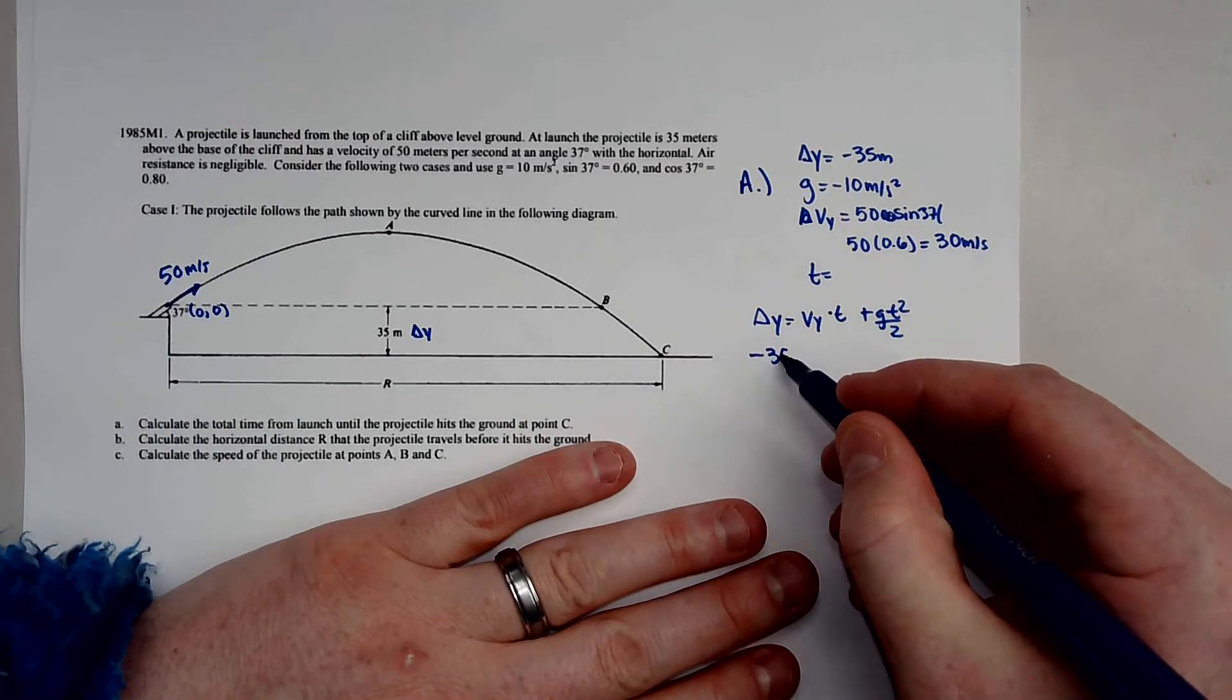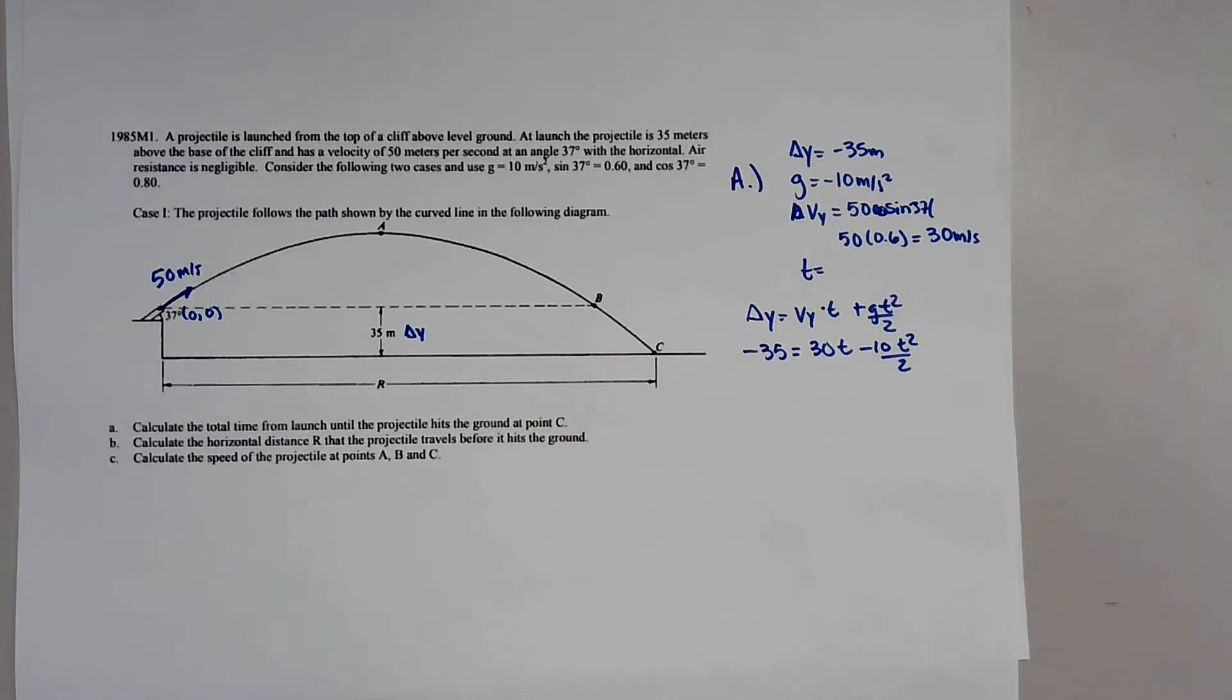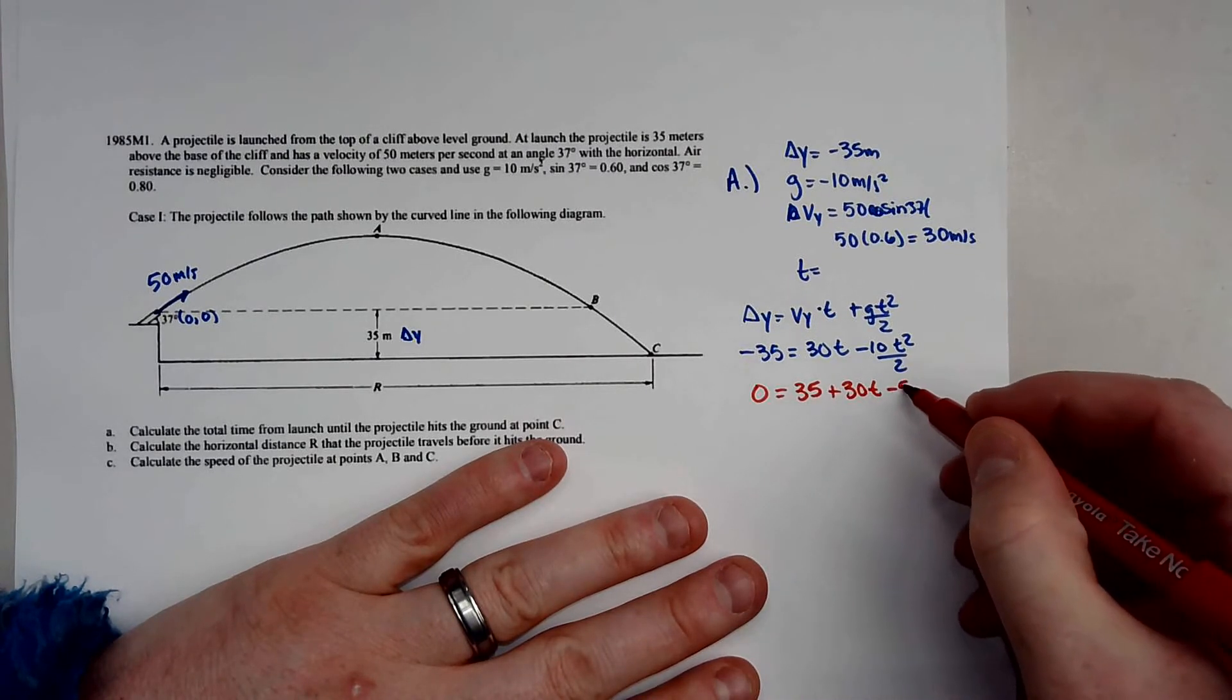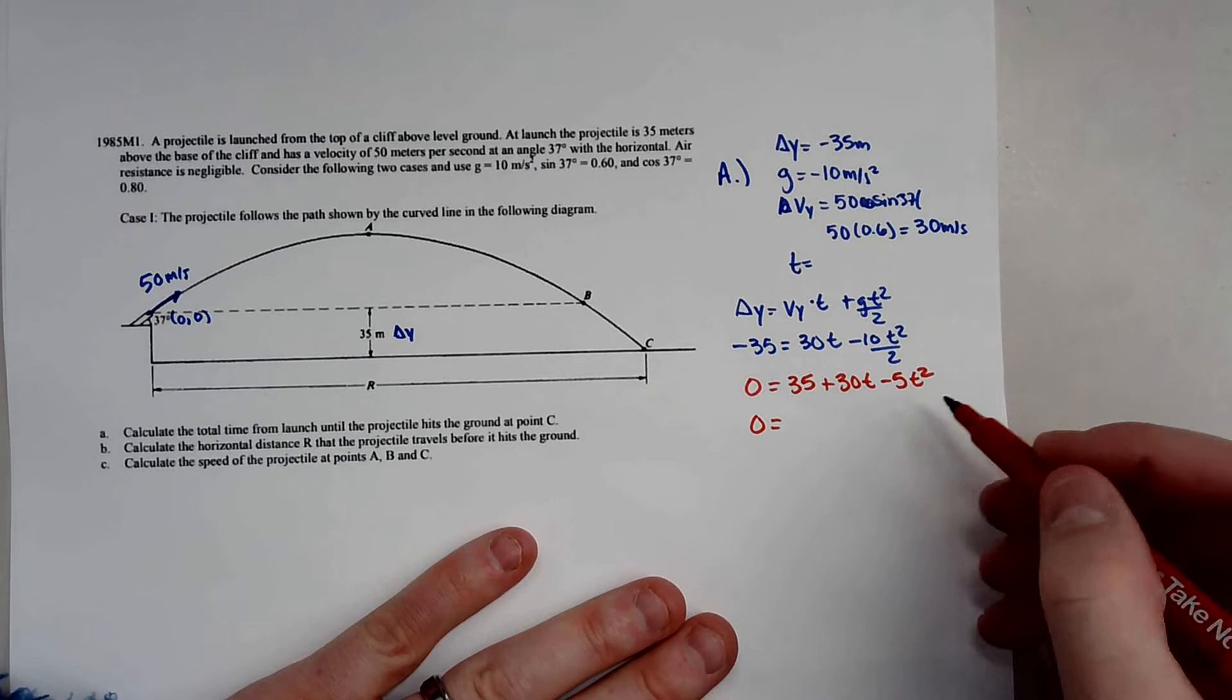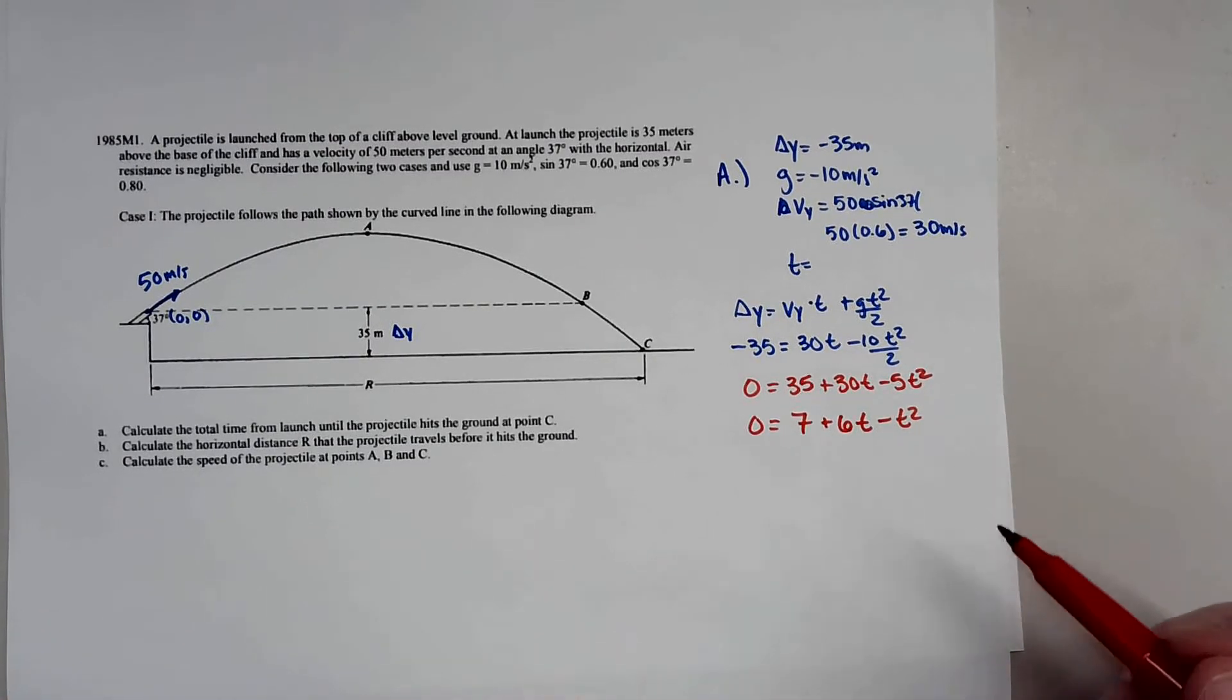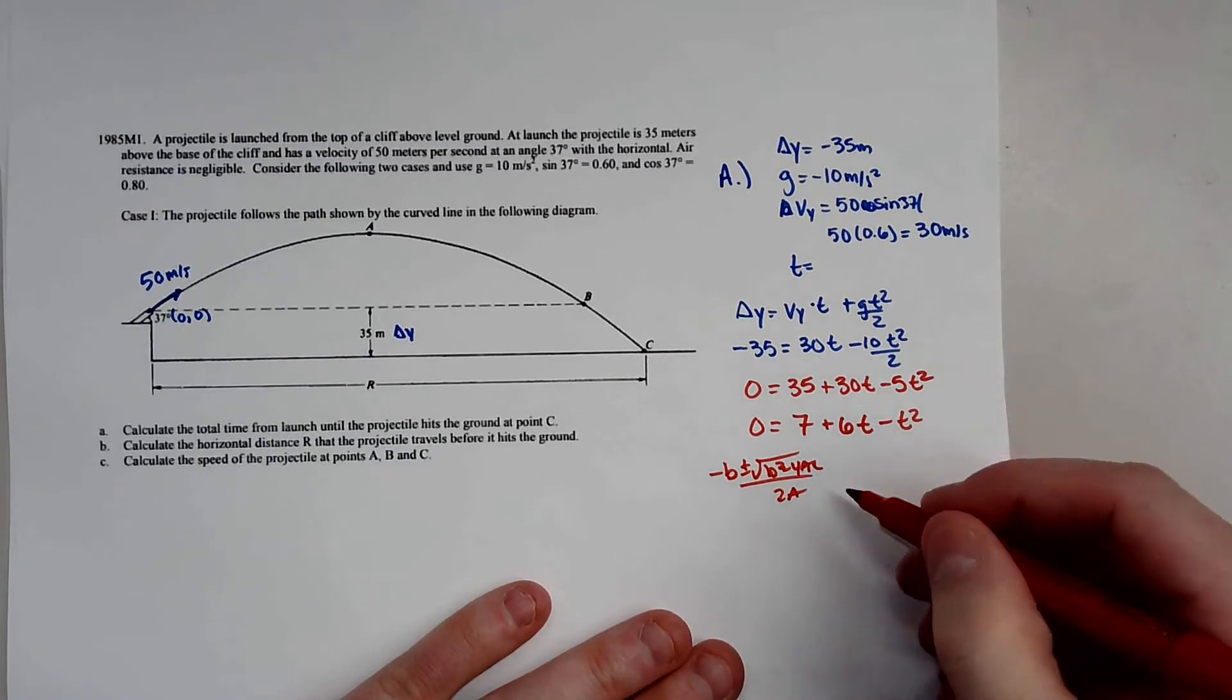Plugging in our variables, you have negative 35 equals 30 times T minus 10 T squared all over 2. And then we can solve for 0. So 35 is equal to 30 T minus 5 T squared. So 10 divided by 2 is 5. Notice they are divisible by 5, so you have 7 plus 6 T minus T squared. You could either do the quadratic formula: negative B plus or minus the square root of B squared minus 4AC all over 2A. You could even do the calculator trick.